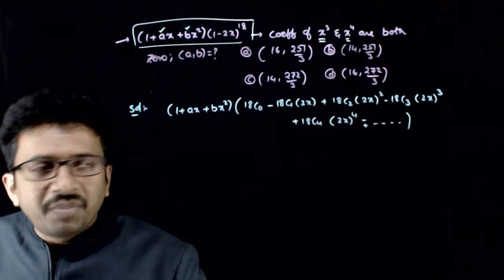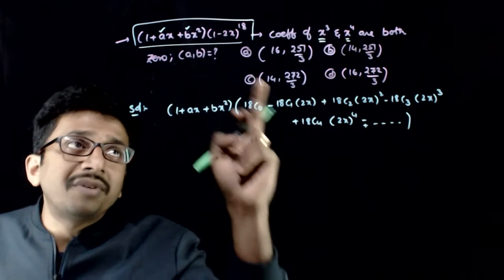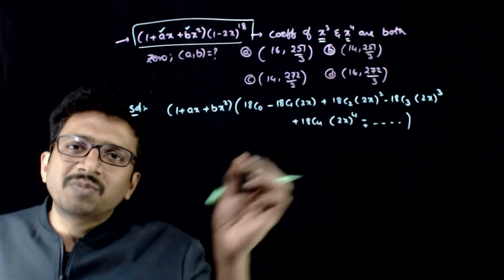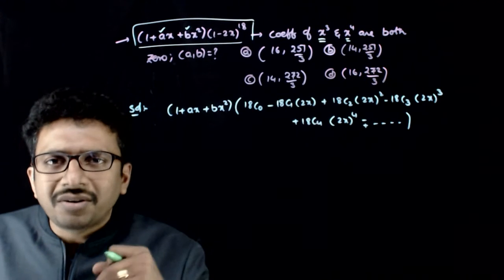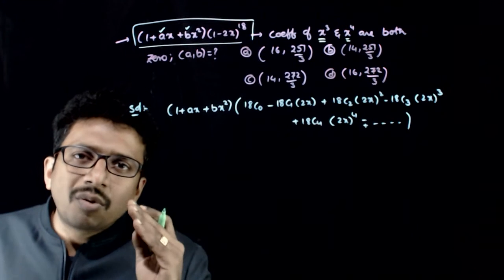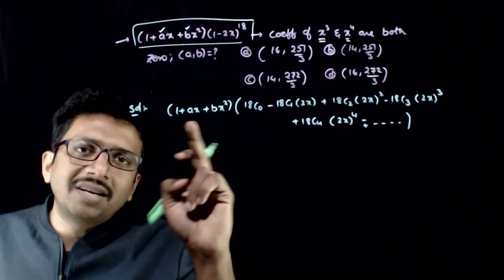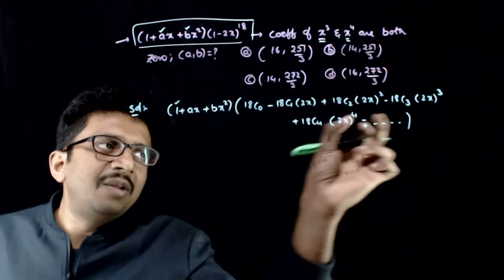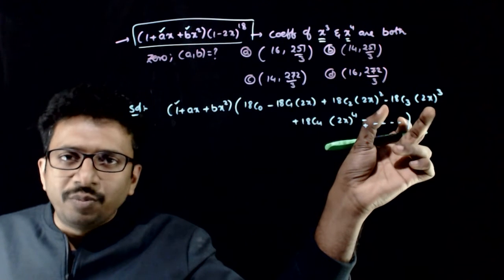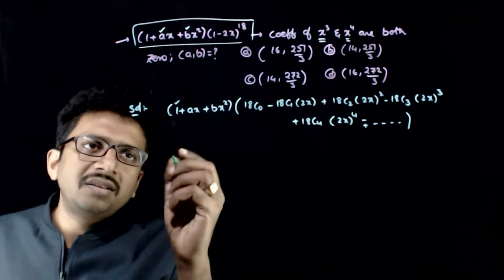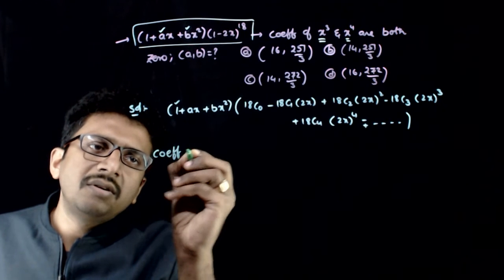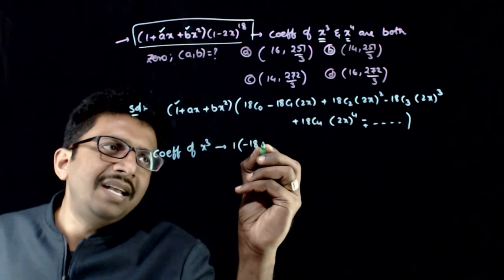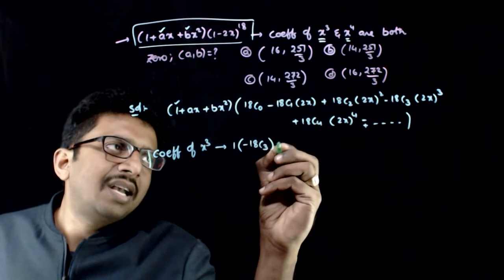I am not writing powers higher than required. I want only up to x⁴. Now, what is the coefficient of x³? When you multiply the two brackets, you get an x³ term when 1 is multiplied by the x³ term in the expansion. So you get 1 times (−18C3·2³).